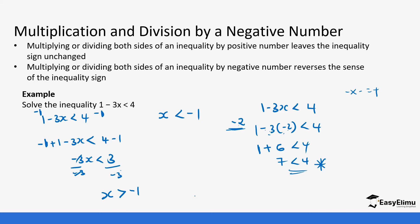After that, we represent the answer on a number line. In this case, we want all values that are greater than negative 1, because that is our correct answer. So our arrow is going to move in the positive direction. And since negative 1 is not part of the solution, you leave it open — the circle is not going to be filled completely.